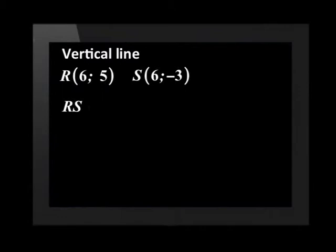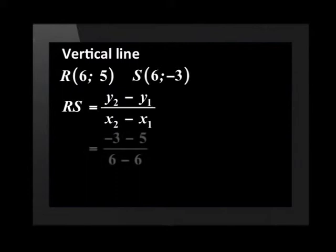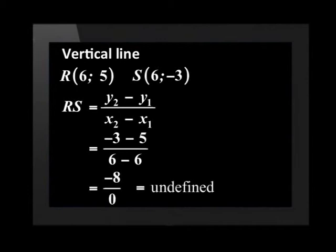R is (6, 5). And point S is (6, -3). By using the same gradient formula and substituting in the coordinates of R and S, we get -3 minus 5 over 6 minus 6. The denominator has a value of 0, making the gradient undefined. This is always true for horizontal and vertical lines.